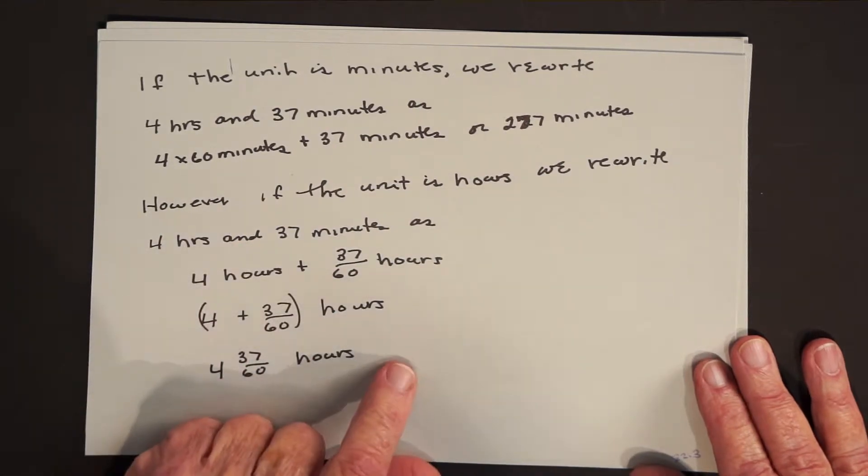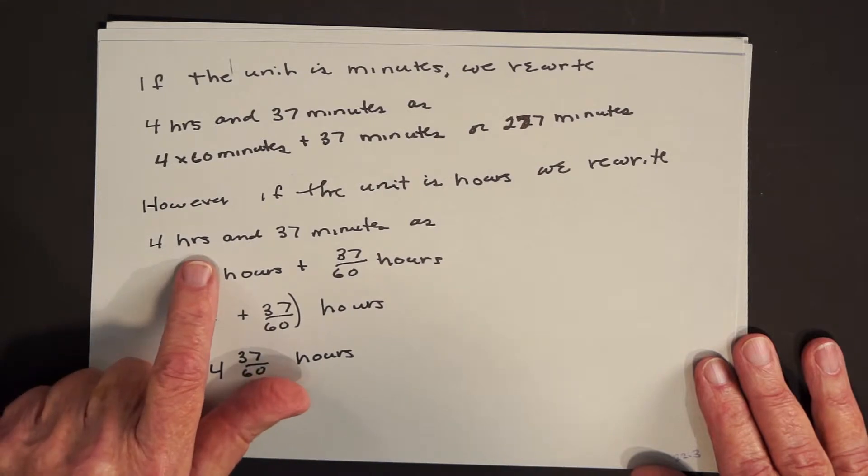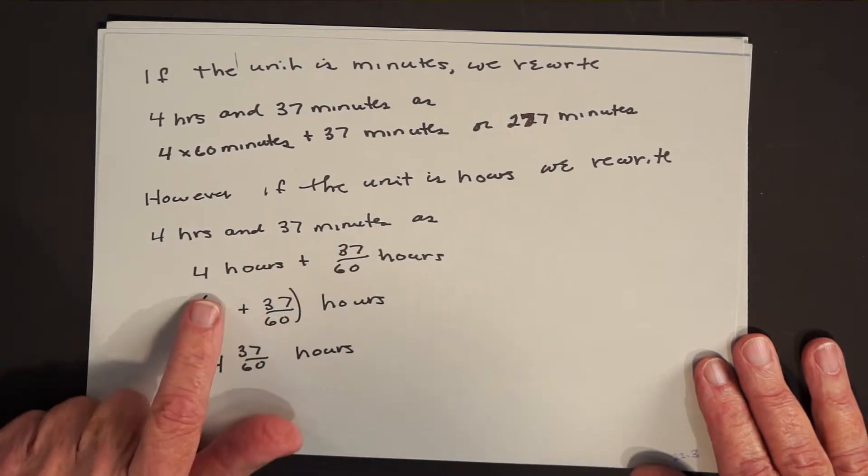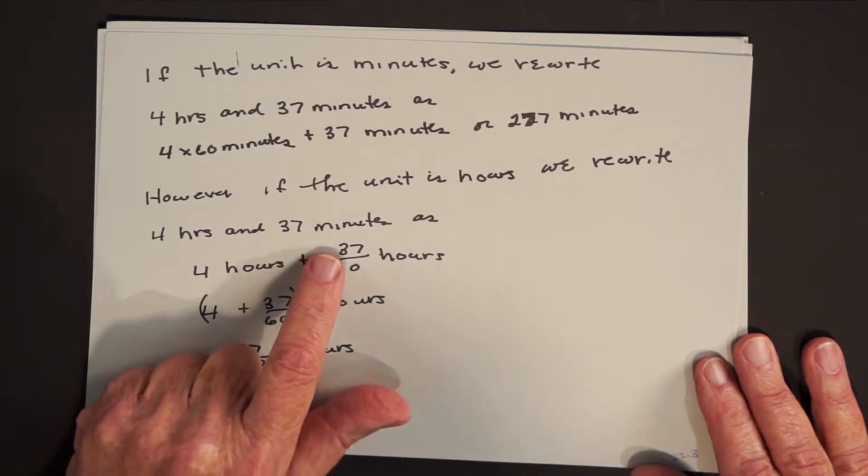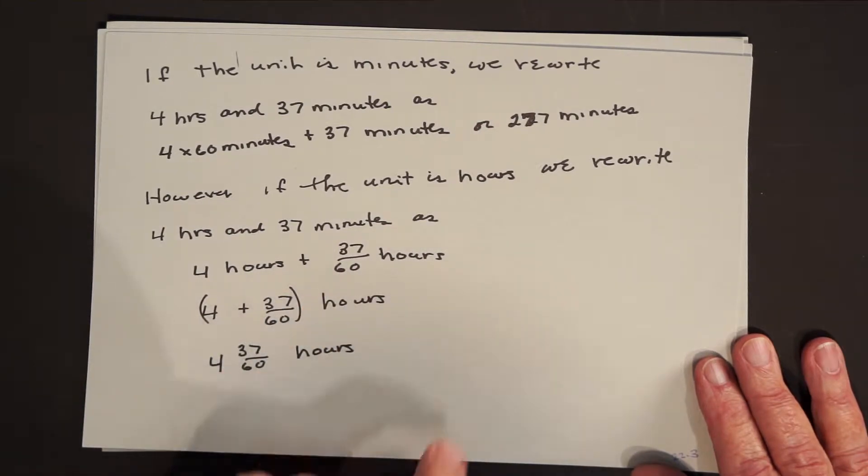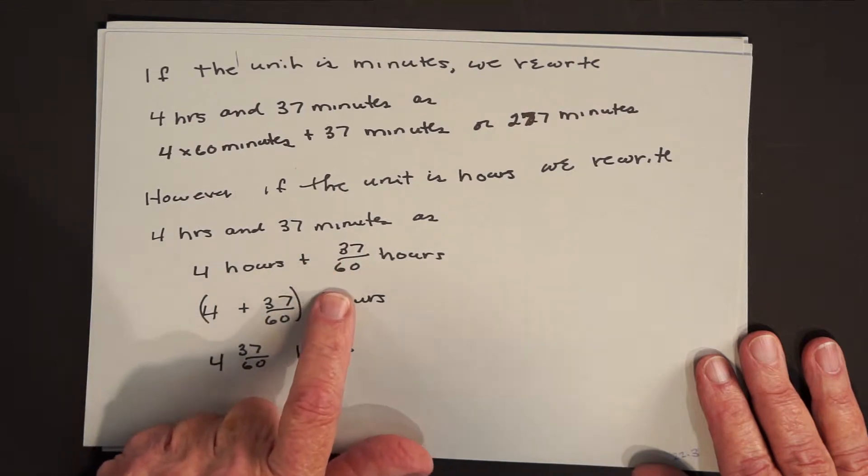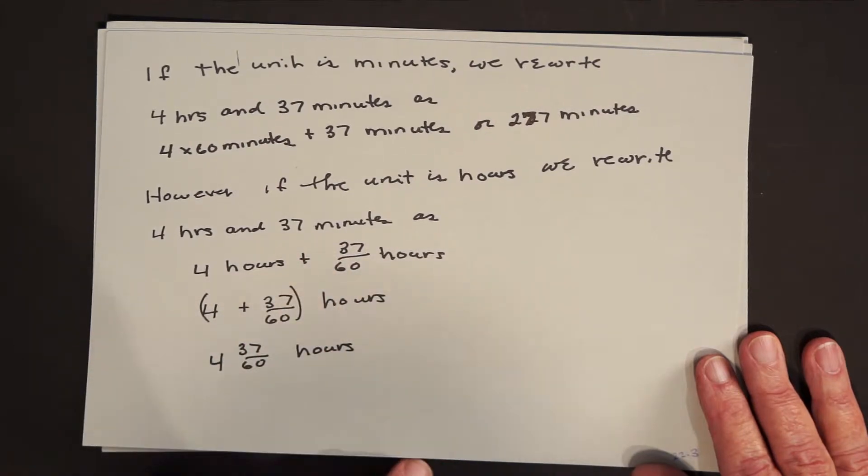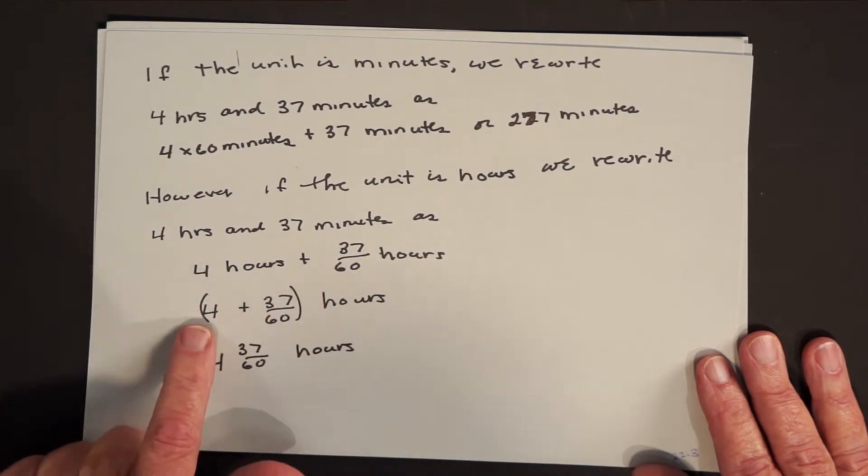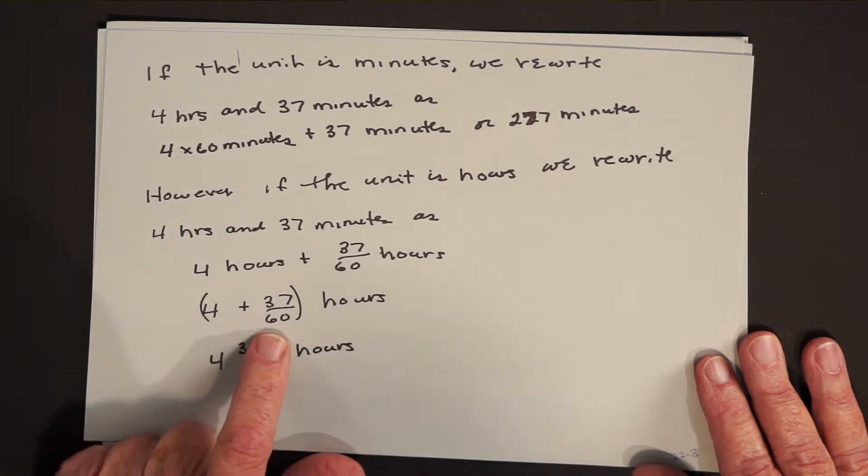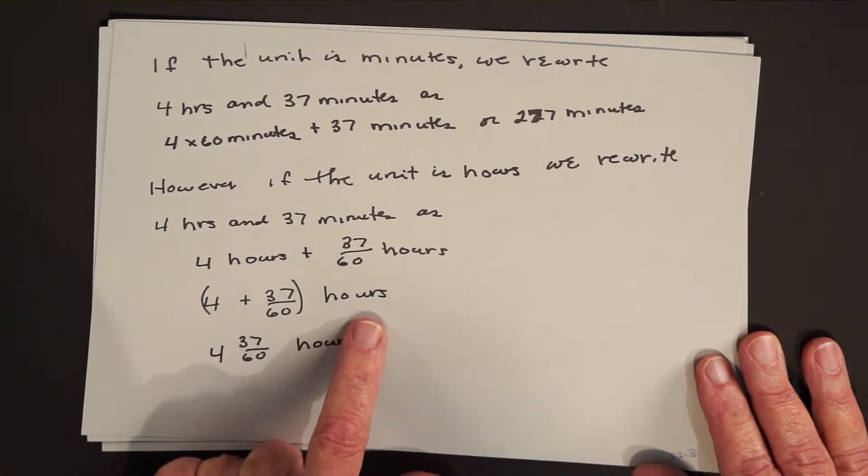However, if the unit is hours, we write 4 hours and 37 minutes as 4 hours plus 37 of what it takes 60 of to make an hour. And now, since the 4 and the 37 sixtieths are modifying the same noun, we can add the adjectives, 4 plus 37 sixtieths, and keep the common noun, which is hours.